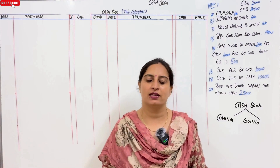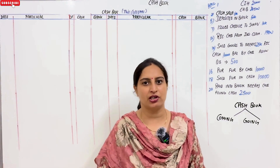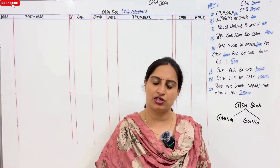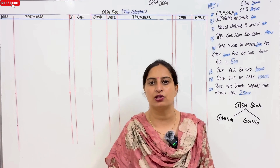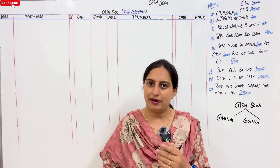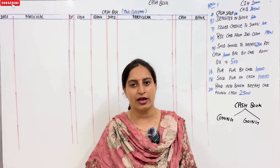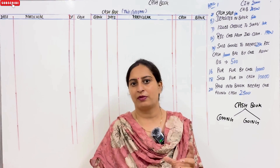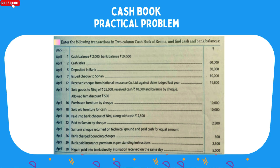Hello everyone, welcome back to my channel. I am Pooja Setia. Our chapter is going on cash book, and we have practical questions from TS Grewal's book. We have done the illustration before. Now, the next question has a double column cash book — a two column cash book. Look at the question on the screen. Enter the following transactions in the two column cash book of REMA and find the cash and bank balance.